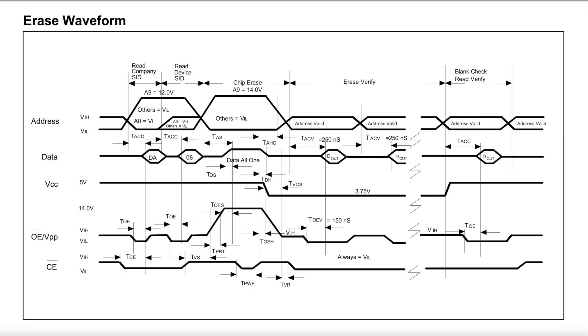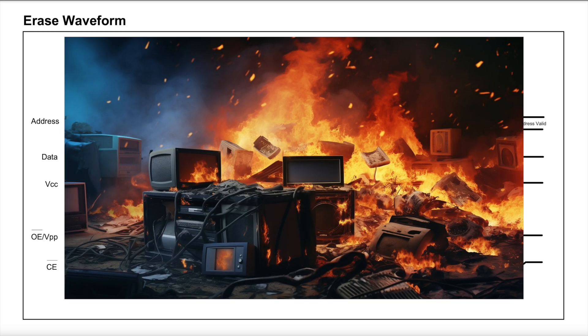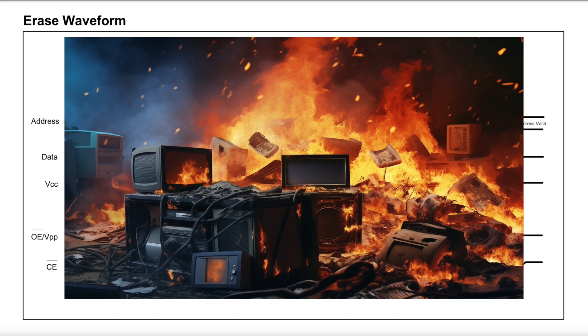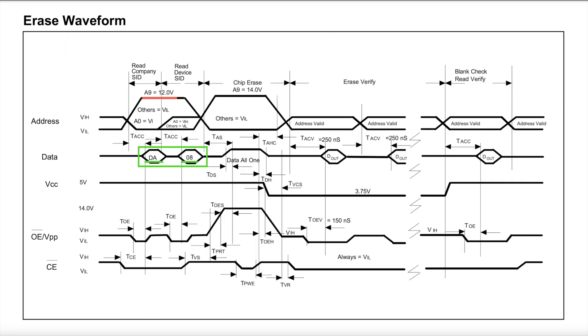Well, if we take a look at the datasheet for this particular model, we'll find a waveform diagram that shows the bit twiddling we need to do. It's mostly just good practice, but first we read the serial number by setting A9 to 12 volts, and otherwise doing a normal read of the manufacturer ID, and then reading the device ID by setting A0 to 5 volts. And if you don't read the right IDs, we probably have the chip in backwards and want to stop putting 12 volts on the line immediately.